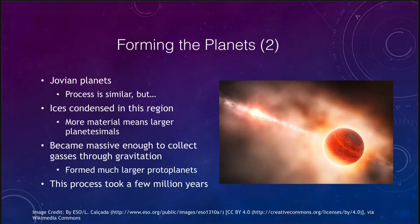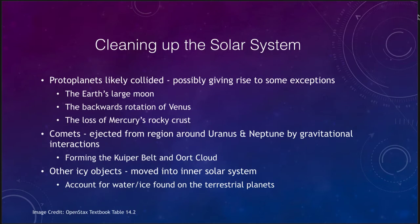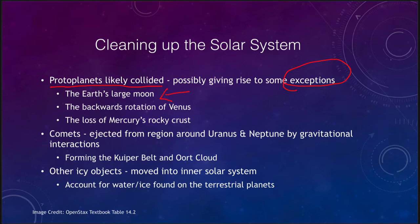Let's look at how we can clean up the solar system, because we don't see a lot of this material around anymore. The protoplanets likely collided together over time and built up together, and they may account for some of the exceptions we see to the general properties of the solar system. The Earth has a large moon — it's the only smaller planet with a very large moon. Venus rotates backwards. Mercury probably had some kind of rocky crust that seems to be lost. Large impacts could explain these exceptions.